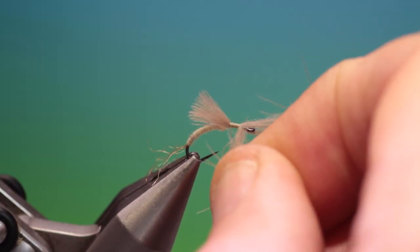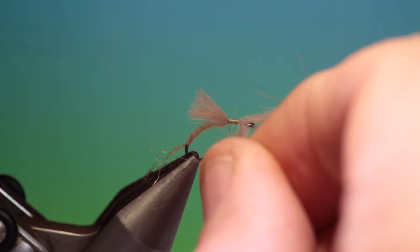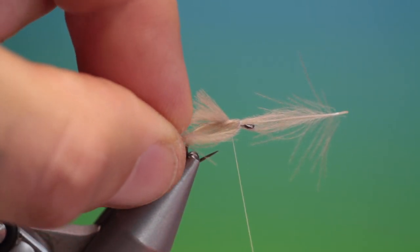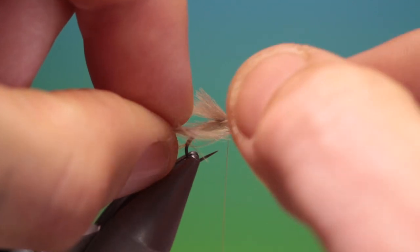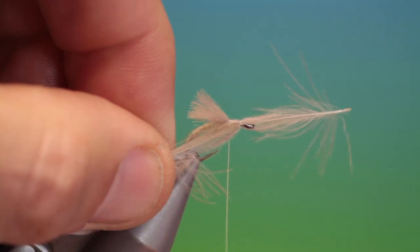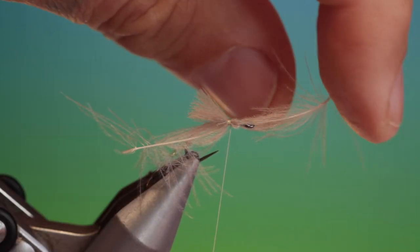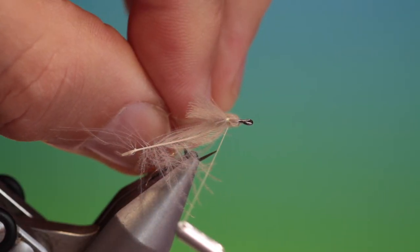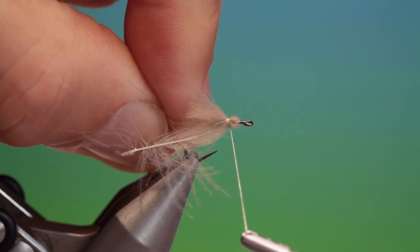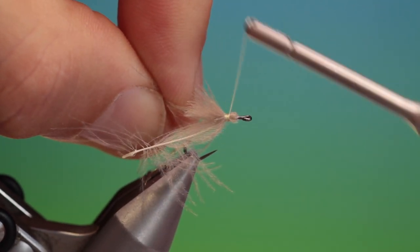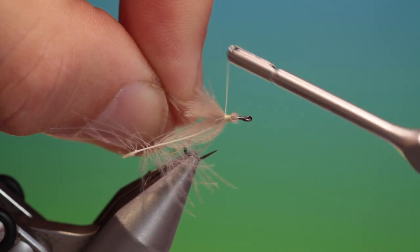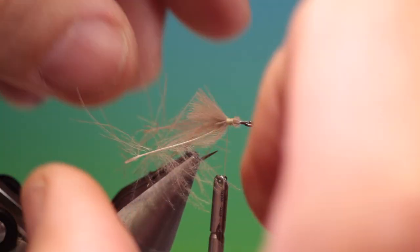What we do now is we pull this one back to the side. And we make two or three tight wraps and then we do the same on this side, pulling it down. So they're both facing backwards.